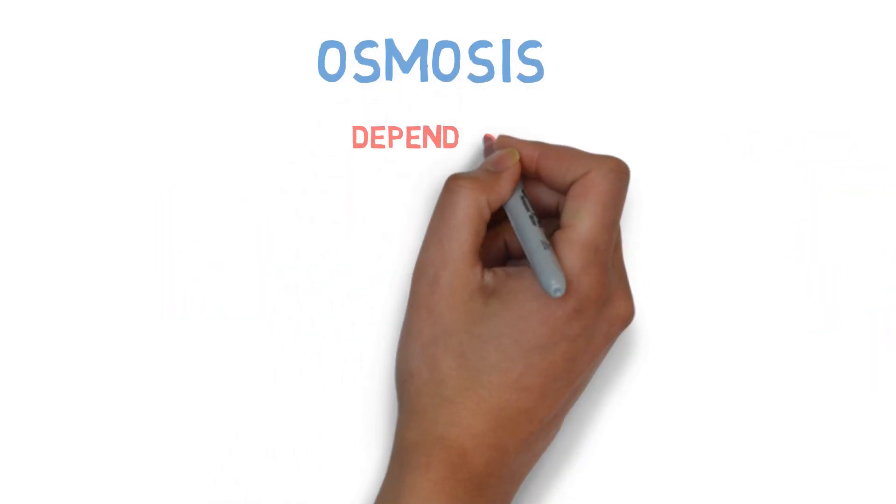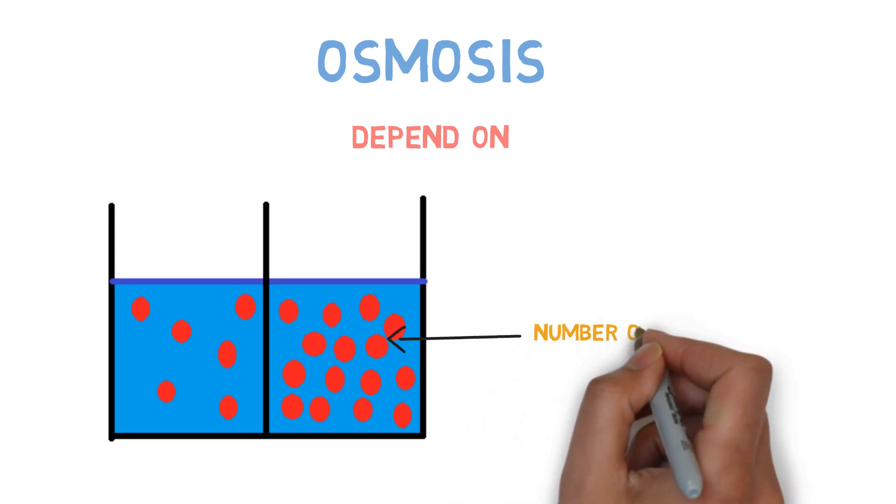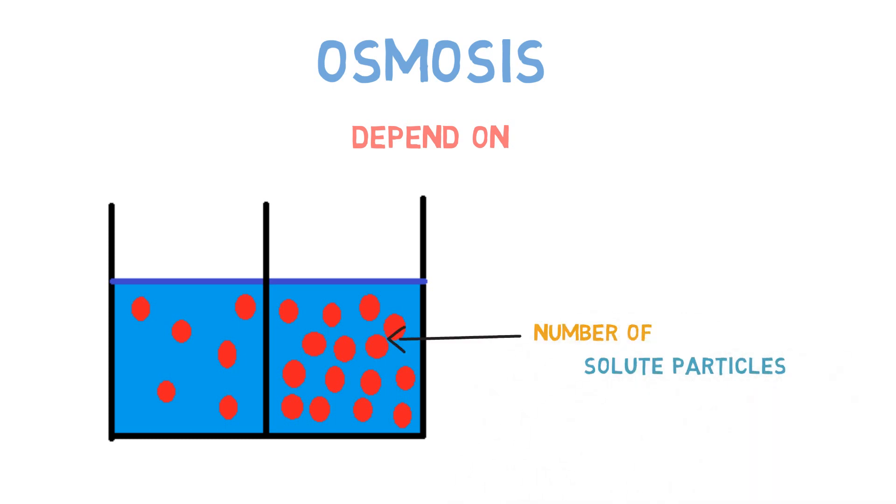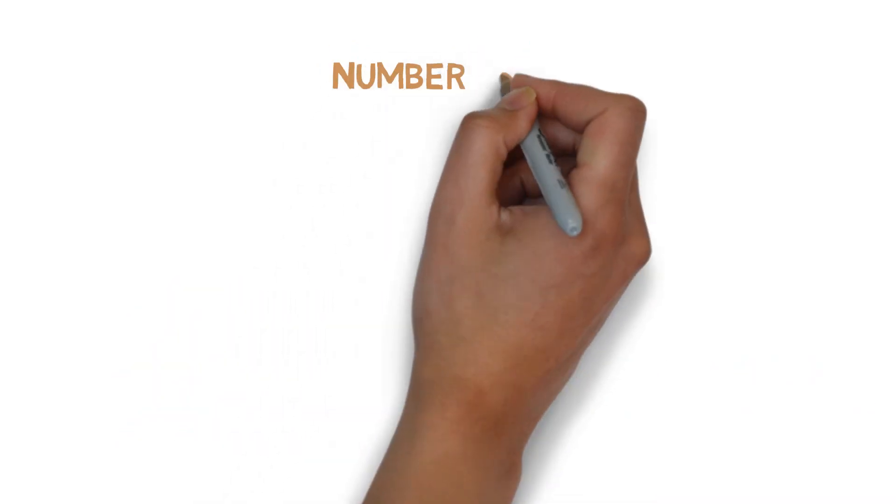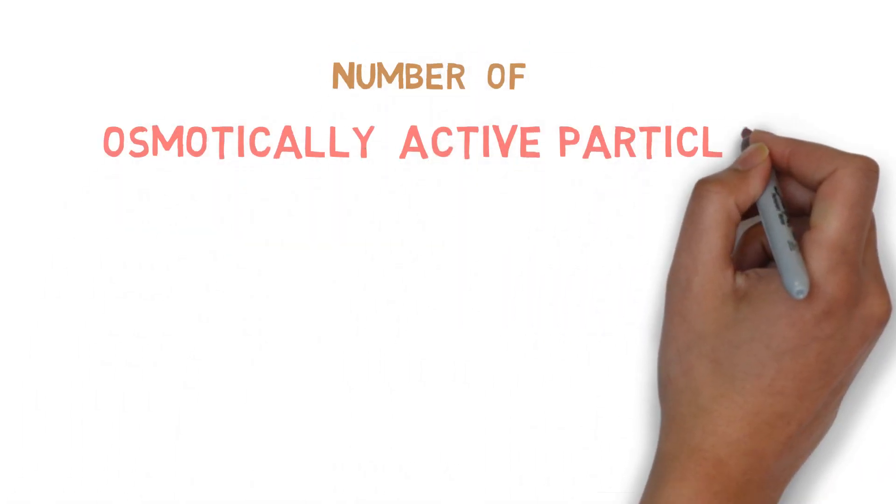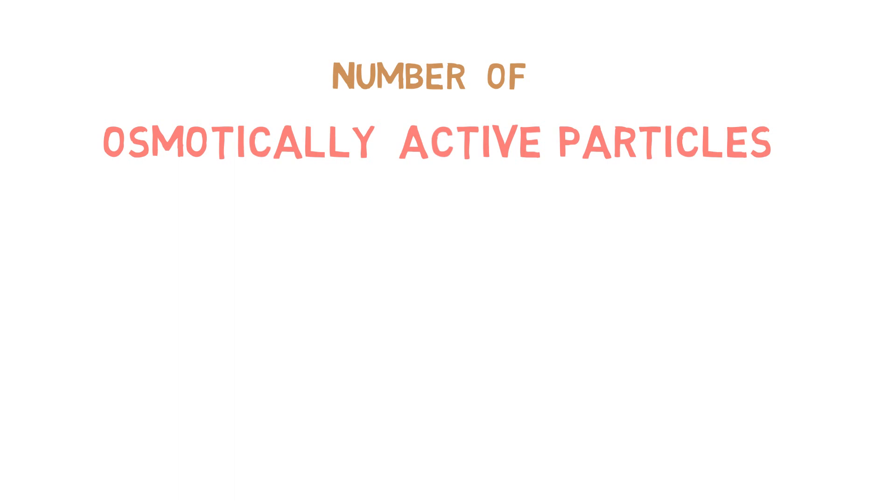Osmosis is dependent on the number of solute particles dissolved in a solution. These particles are called osmotically active particles. The dissolved number of osmotically active particles in a solution is expressed either by osmolality or osmolarity.